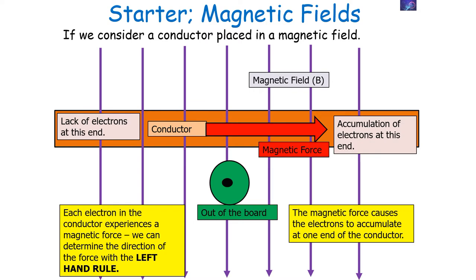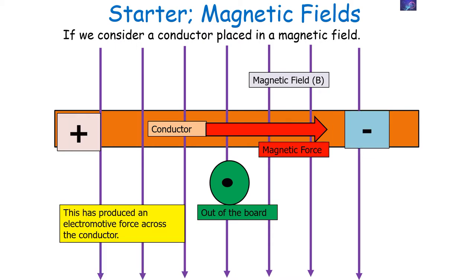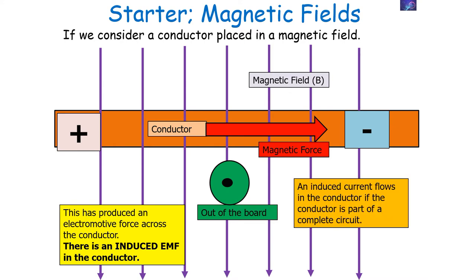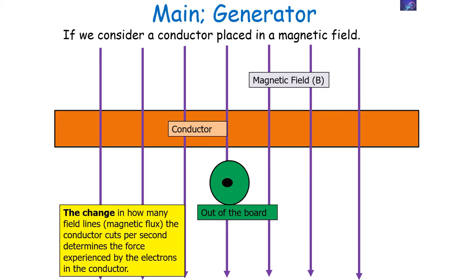The electrons all move to one side, giving one end a negative charge and the other a positive charge. We've produced an electromotive force across the conductor — an induced EMF — and this leads to an induced current flowing in the conductor if it is part of a complete circuit. This is the generator effect and how current is produced in power stations. The change in how many field lines or magnetic flux the conductor cuts per second determines the force on the electrons, so the change in magnetic flux linkage per second determines the value of the induced EMF.